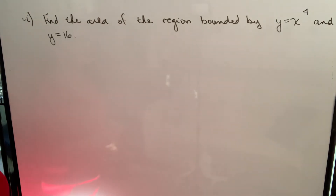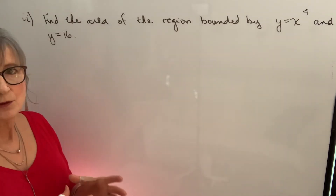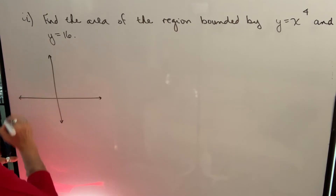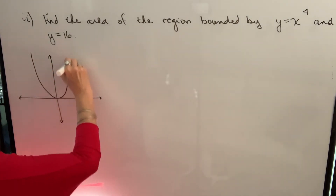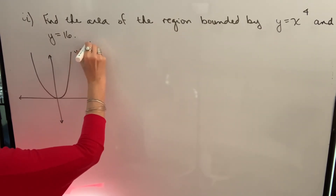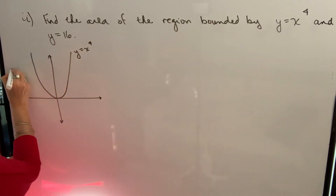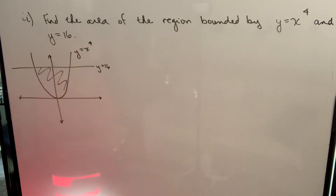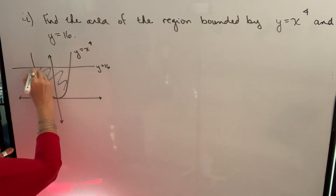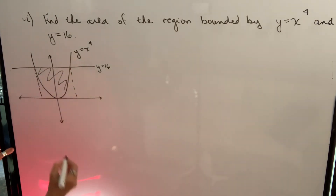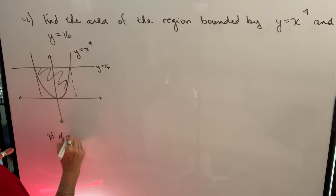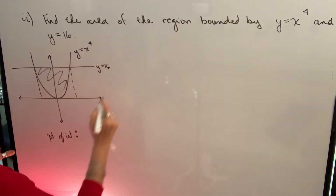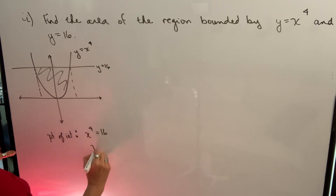Our next example says find the area of the region bounded by y equals x to the fourth and y equals 16. Let's draw the two curves: y equals x to the fourth has this shape, and y equals 16 is a horizontal line. This is the region we want to find. We find our points of intersection by setting x to the fourth equal to 16, then taking the fourth root of 16, which gives positive and negative 2.